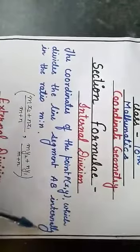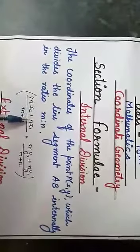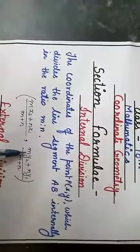The coordinates of point P(x, y) which divide the line segment AB internally in the ratio m:n are: (mx₂ + nx₁)/(m + n) and (my₂ + ny₁)/(m + n).